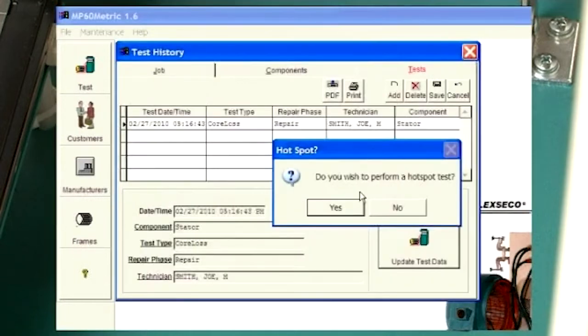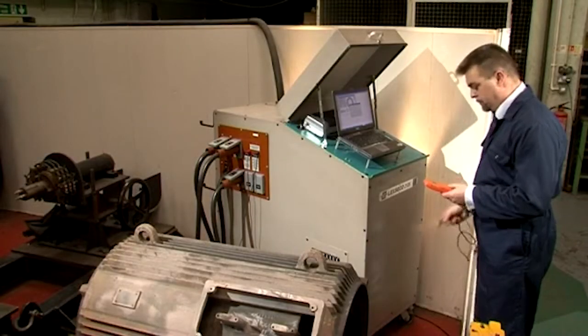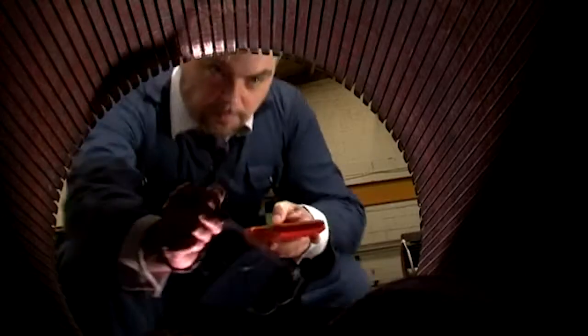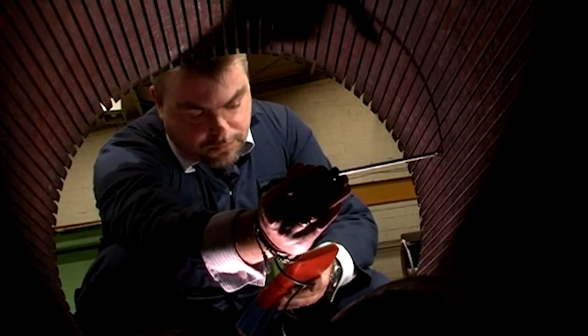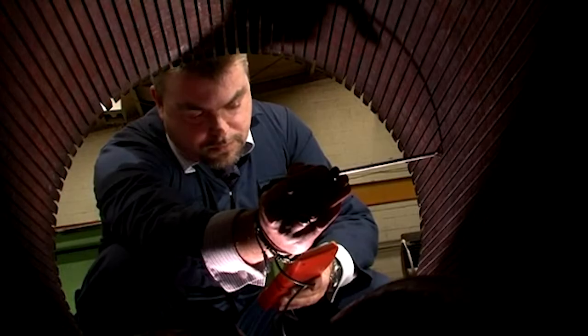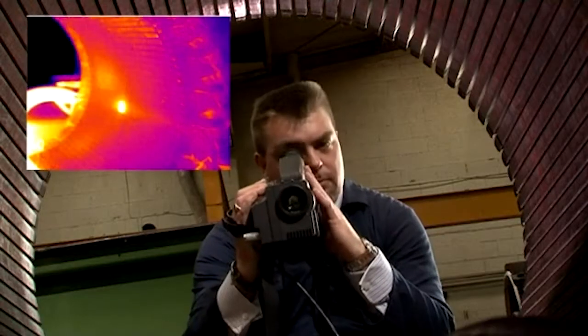Lexico core loss testing can then be applied to check for any localized areas of degradation once the test for average core loss has been carried out. This can be done in conjunction with a contact temperature probe, any suitable non-contact thermometer, or a thermal imaging camera.